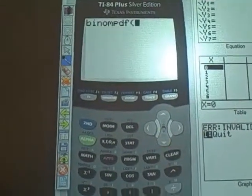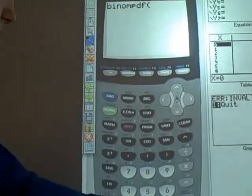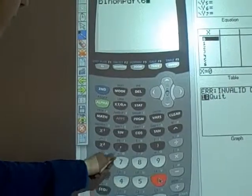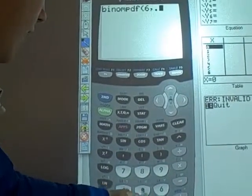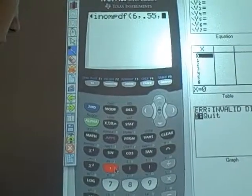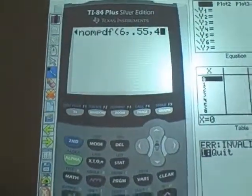Hit enter, and you enter your numbers: 6, comma, 0.55, comma, 4, and hit enter.